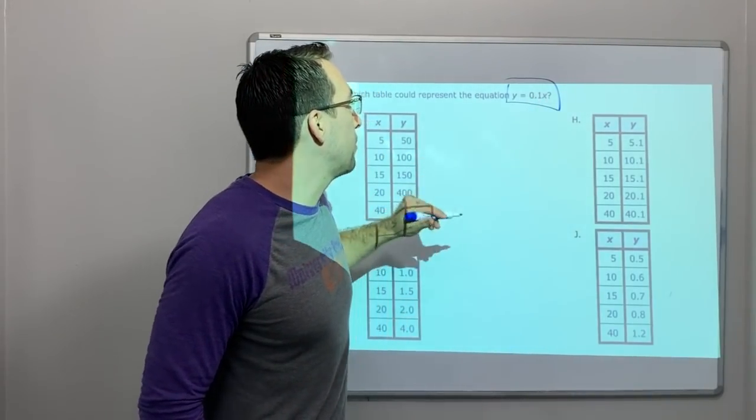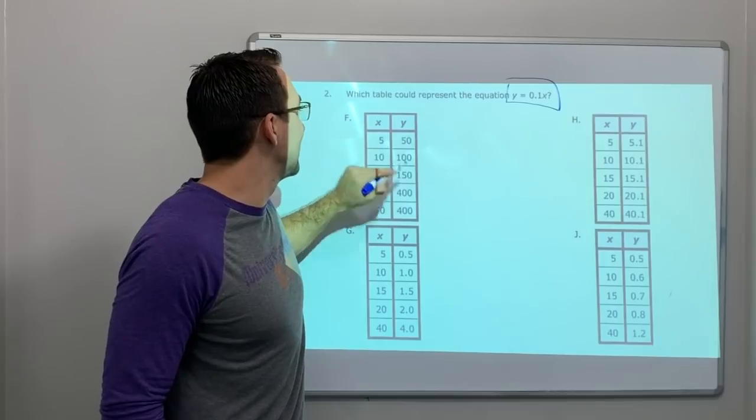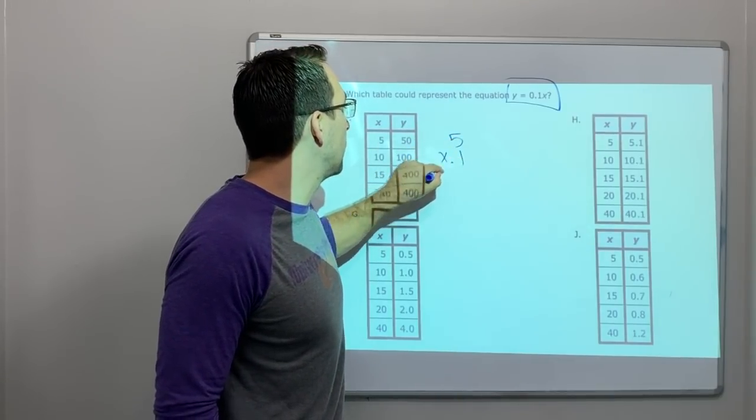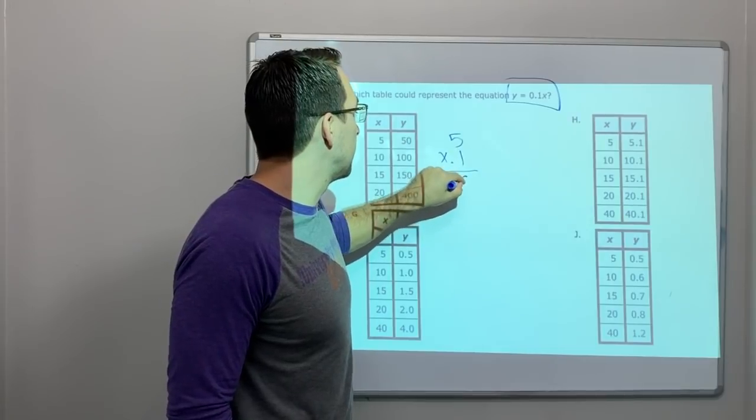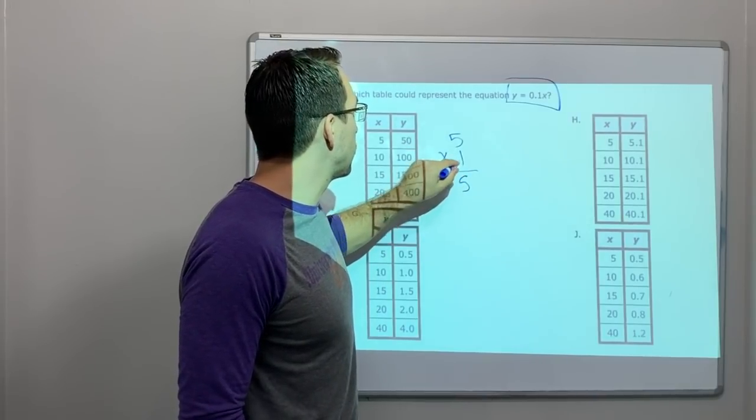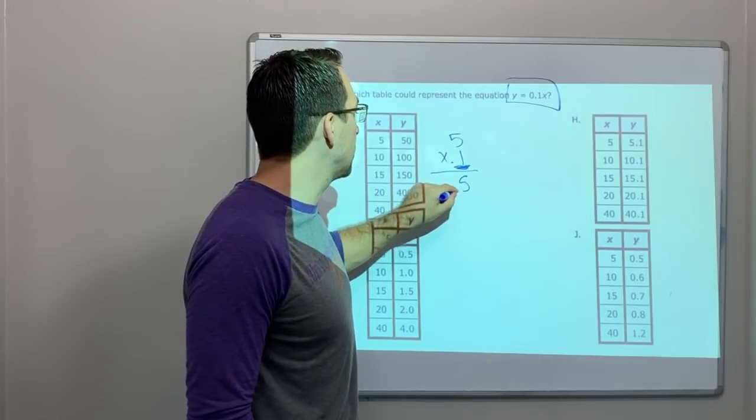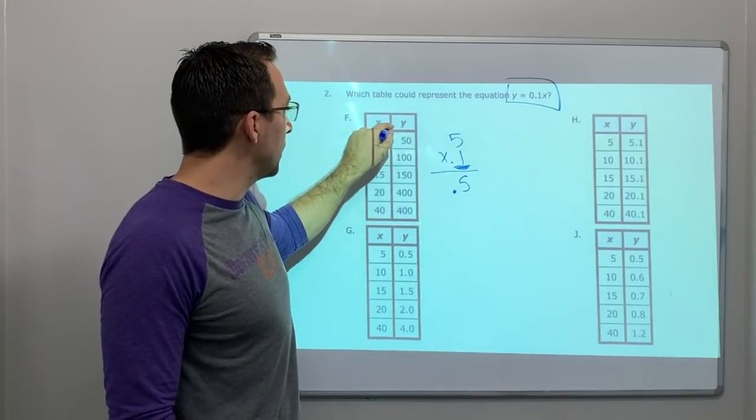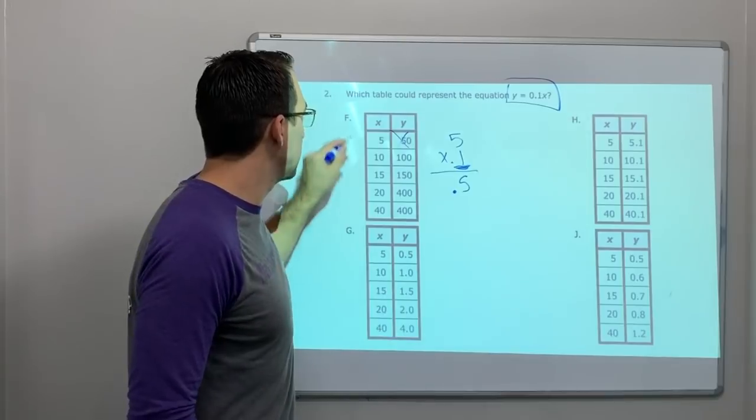So we know about multiplying. So let's do x. x is 5. We're going to multiply times 0.1. That is 5. And now there's one decimal in the question, in the problem. So it would be 0.5. No. Y doesn't equal 50. It equals 0.5. So f is not it.